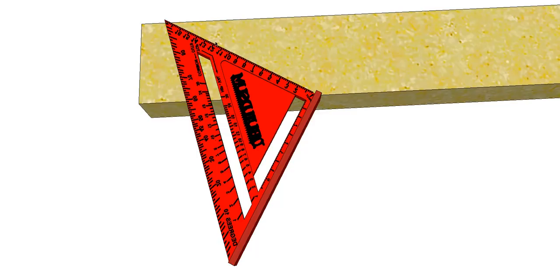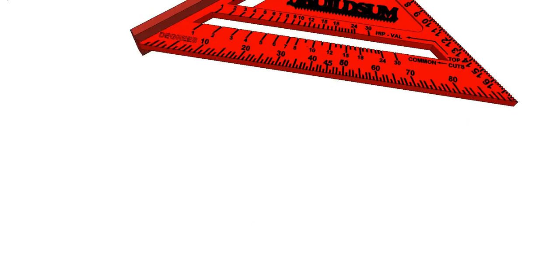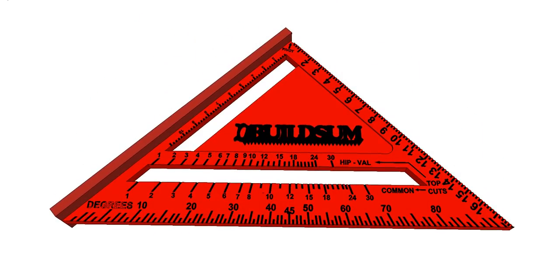So there you go. There's the speed square and the bevels that you can obtain, or the way you can use it to get your bevels for your plumb bevel common rafter and your plumb bevel hip.